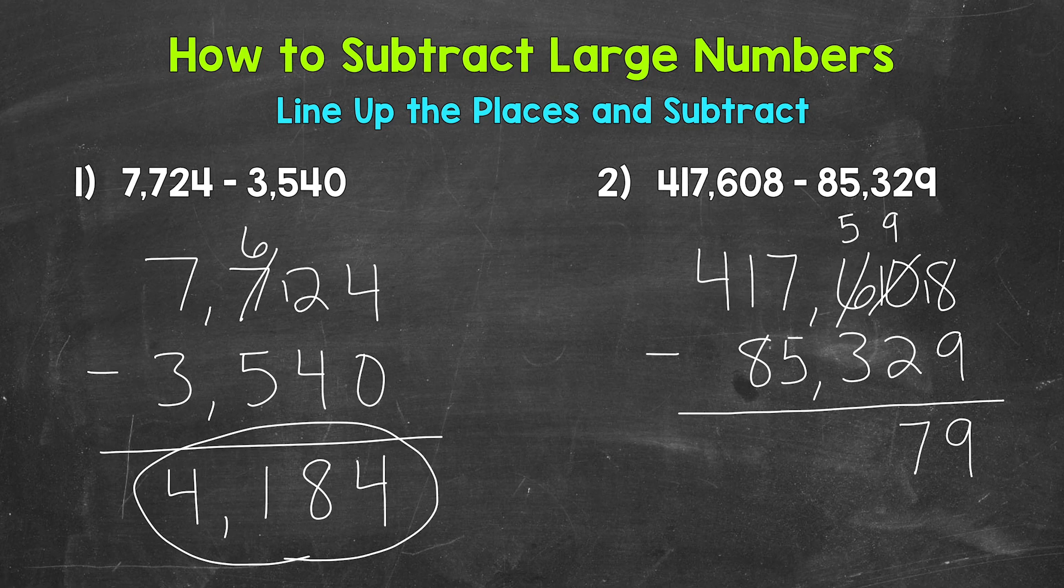Now the hundreds place. Five minus three is two. Now the thousands place. Seven minus five is two. And now the ten thousands place. We have one minus eight. We can't do that. So we need to borrow from the hundred thousands place. That's now a three. And we have 11 minus eight, which is three.